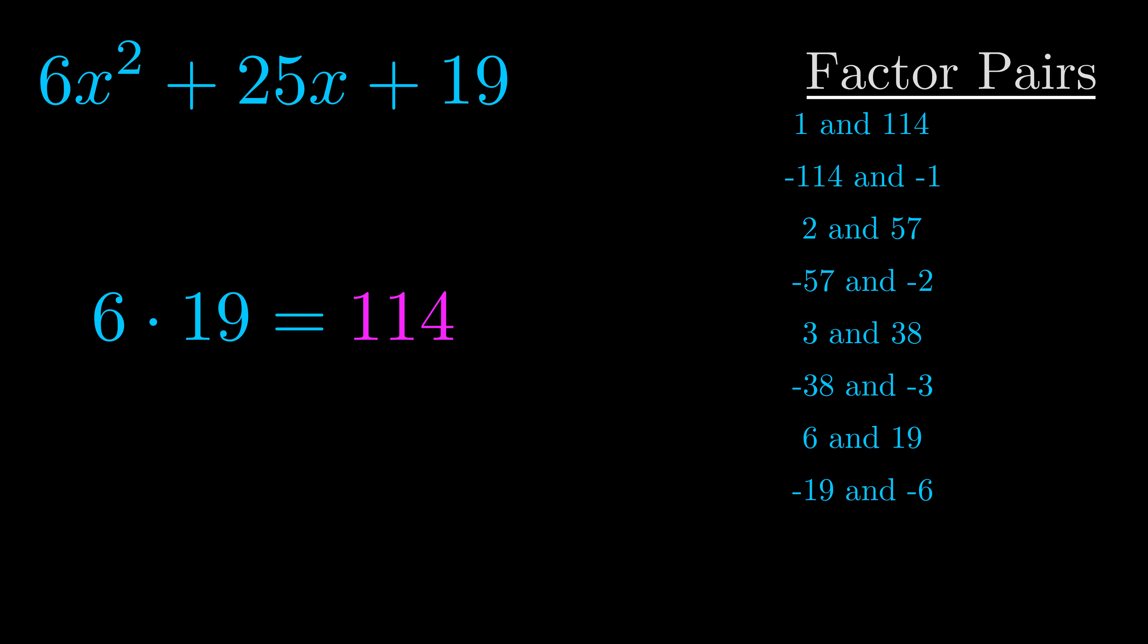The b value is the coefficient on the x term. That's the middle term, the one that we haven't done anything with yet. And really this is the only factor pair that we need.